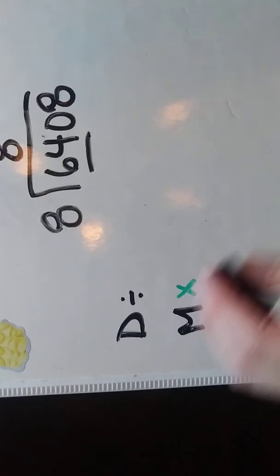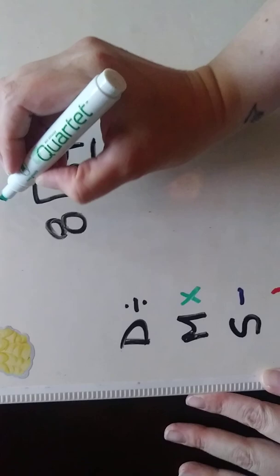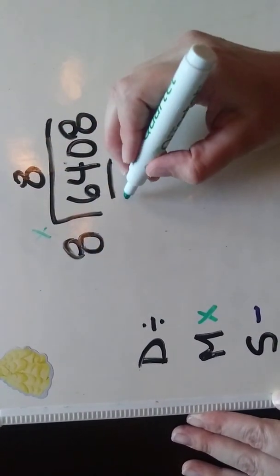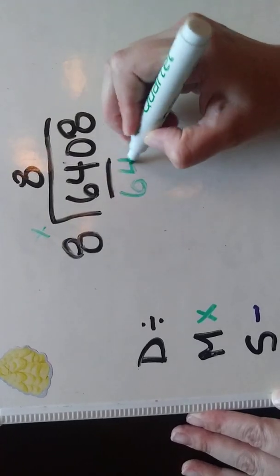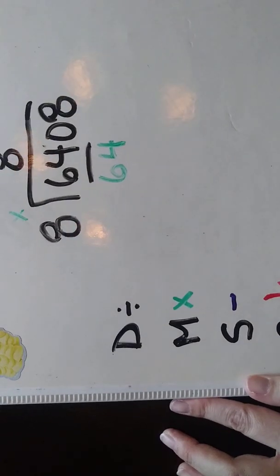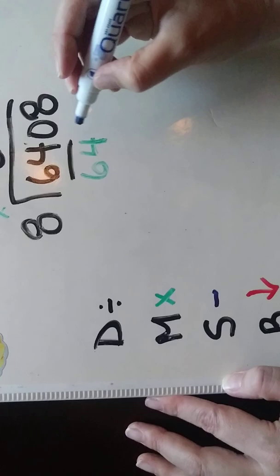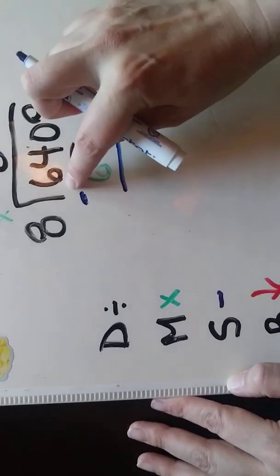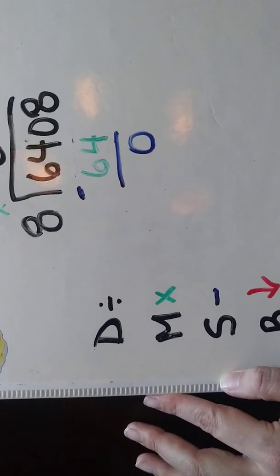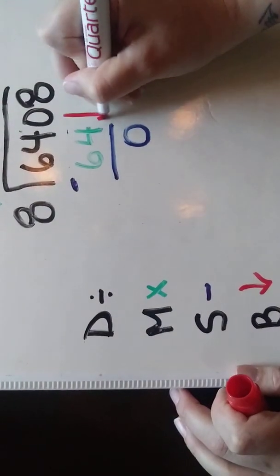Now we're going to move on to multiplication. For our multiplication step, we're multiplying the two numbers on the side here: 8 times 8 is 64. There's our multiplication step. Then we're going to do our next one, subtraction: 64 minus 64 is 0. And then our fourth step, bring down. We're going to bring down the next number, which is 0.